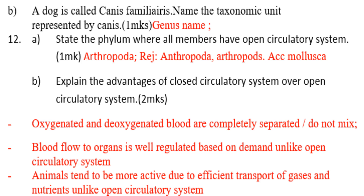Number 12: explain the advantages of a closed circulatory system over an open circulatory system. Number one: oxygenated and deoxygenated blood are completely separate and do not mix. Number two: blood flow to organs is well regulated based on demand, unlike in an open circulatory system.